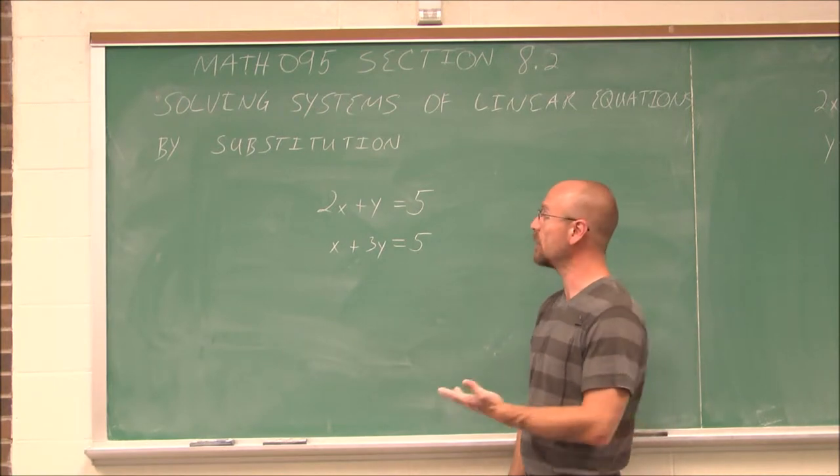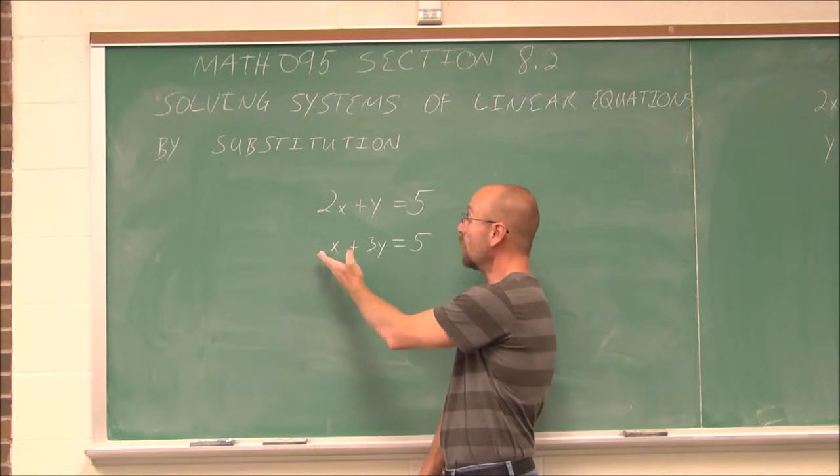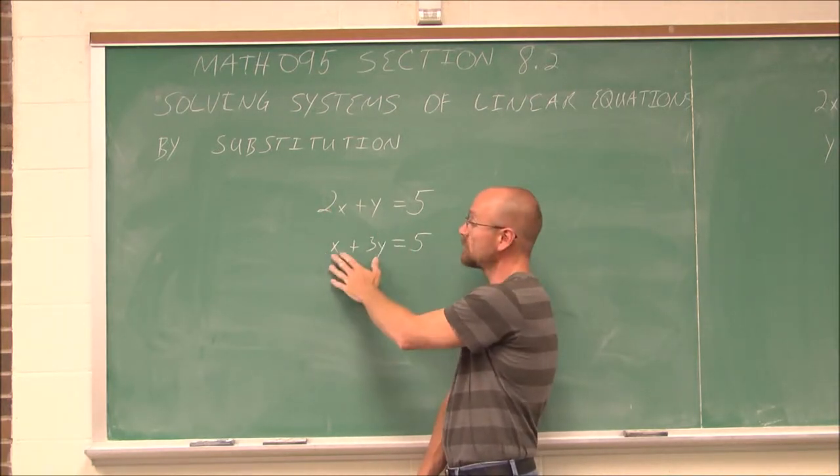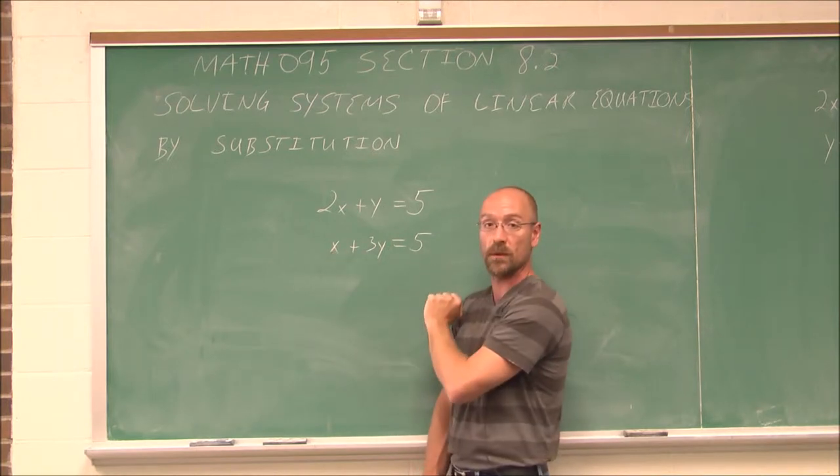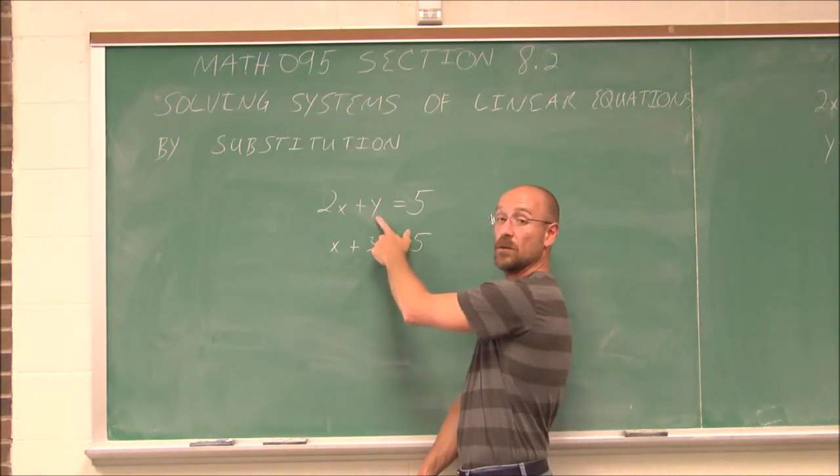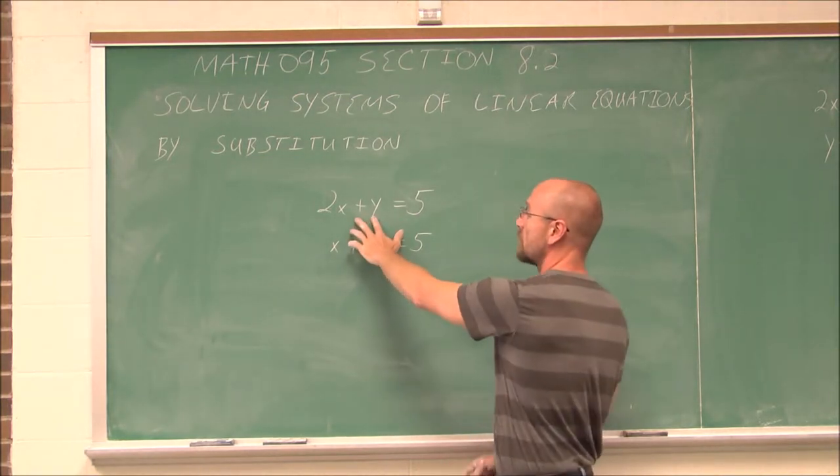Well, I look at this and say, well, this value has a coefficient of 1. 1's smaller than 2 and 3. This one also has a 1. So it would be relatively easy to solve this equation for x. I could just subtract 3y from both sides. But if I looked at this equation, I could solve it for y just as easy, subtracting 2x from both sides. So let's do that. Let's solve this for y.